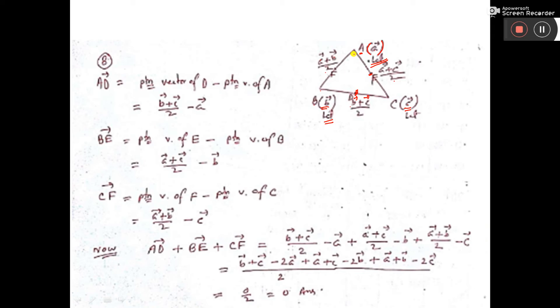Vector AD equals the position vector of D minus the position vector of A. The position vector of D is (b + c)/2, so AD = (b + c)/2 - a.